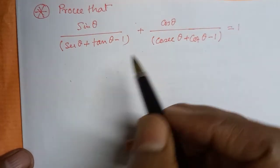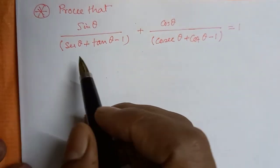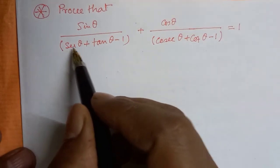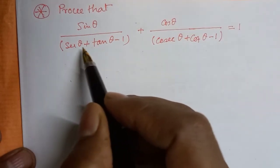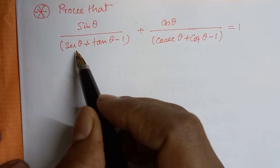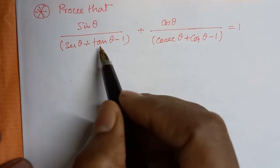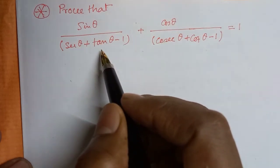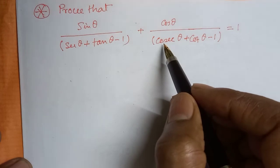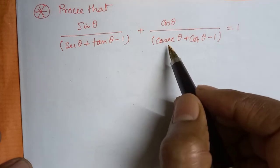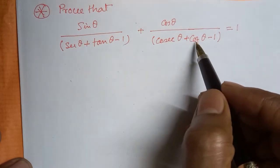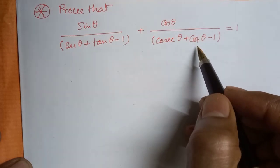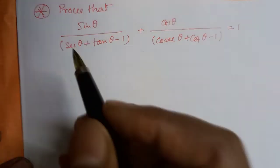At first, we convert secθ to 1/cosθ and tanθ to sinθ/cosθ. Similarly, cosecθ to 1/sinθ and cotθ to cosθ/sinθ.